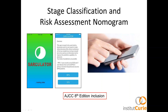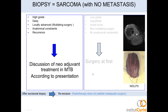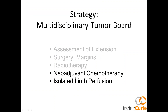For stage classification and risk assessment, there is a nomogram application available on mobile phones called Sarculator. In the case of a high-grade, deep, locally advanced sarcoma requiring mutilating surgery, with anatomical constraints or recurrence, you cannot proceed to surgery first. Instead, you must discuss neoadjuvant treatment at the multidisciplinary tumor board — this may include neoadjuvant chemotherapy, isolated limb perfusion, or radiotherapy.